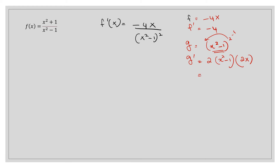Before substituting into the formula, simplify g prime: 2 times 2x gives 4x, multiplied by (x squared minus 1). So g prime equals 4x(x squared minus 1), which you can expand to get 4x cubed minus 4x.